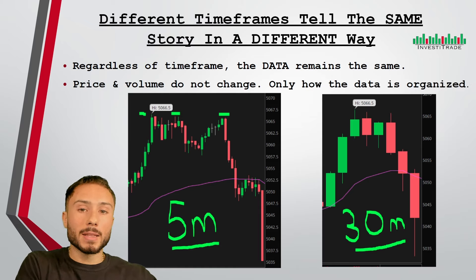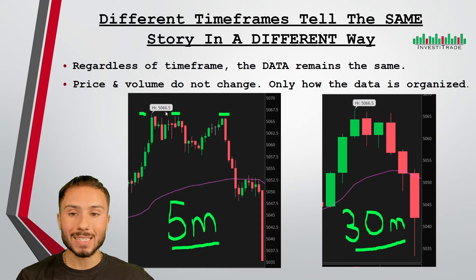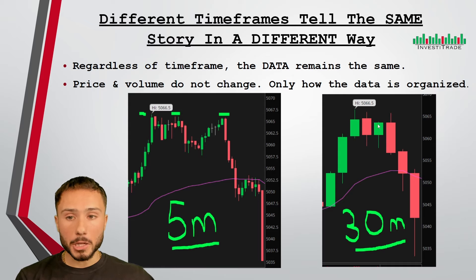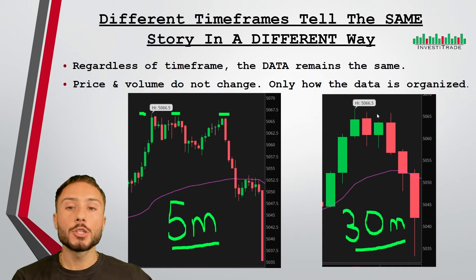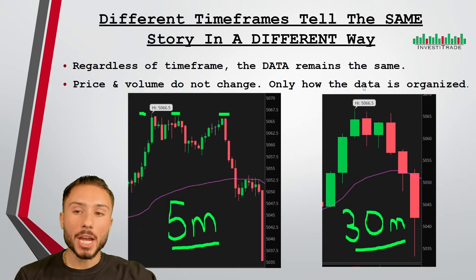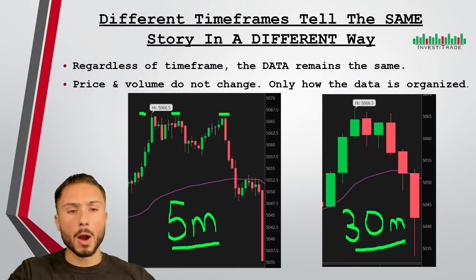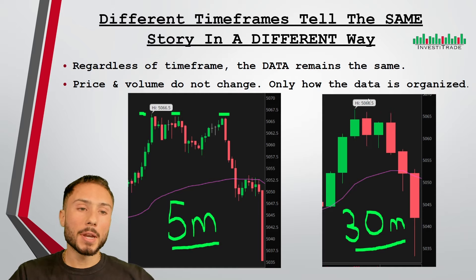Price and volume does not change. What caused the market to reject at these highs — we see a high of 5066.50 on a five minute chart or a 30 minute chart — what caused that high to form and what caused the market to sell off does not change regardless of the time frame. Just as you flip through a five minute, 30 minute, four hour, the data will be organized a little differently.